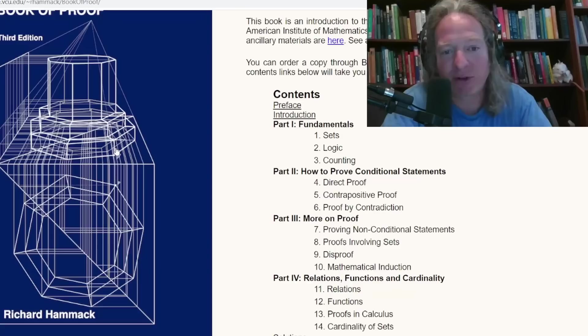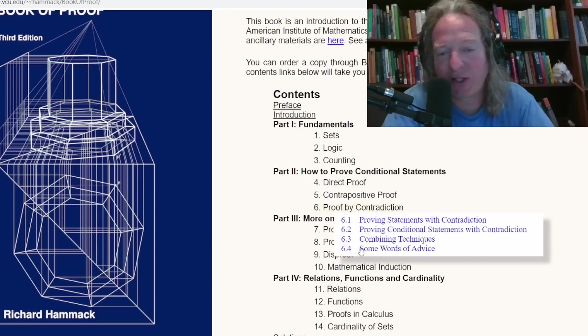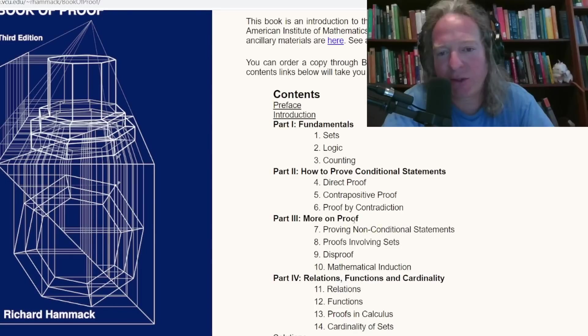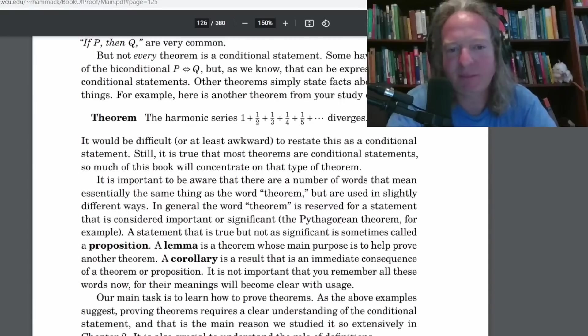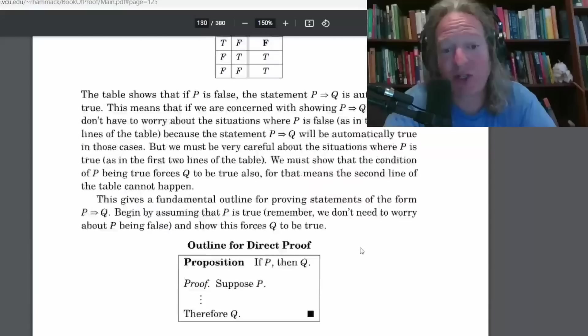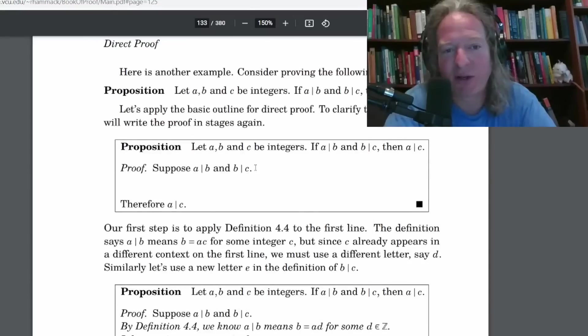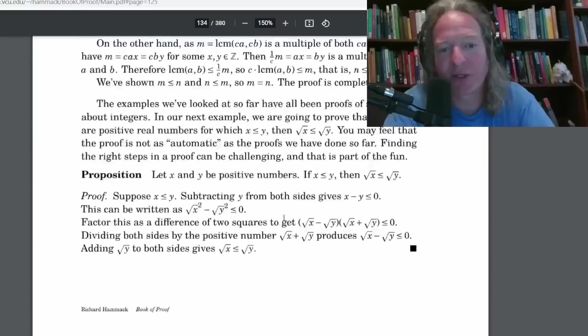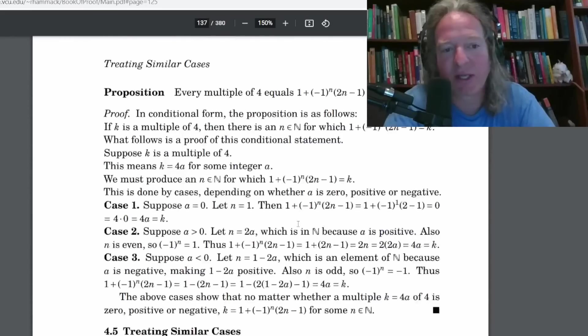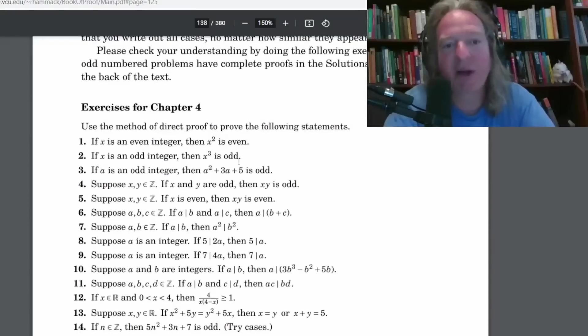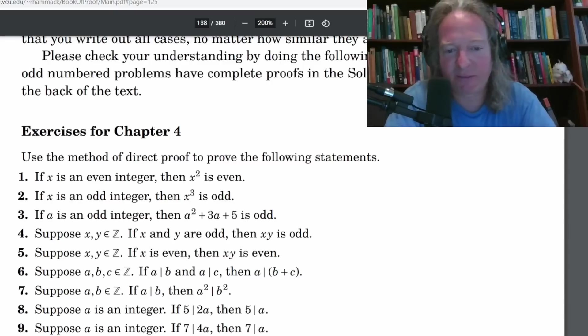This book is great because it's written in a very, very good way. Let's jump to another chapter. Let's go back to direct proof and let's see if we can find some exercises here. He should have some exercises at the end of the chapter. So here's some more examples. So many examples and so many proofs in this wonderful little book. Just awesome. Here we go. Exercises for chapter four.